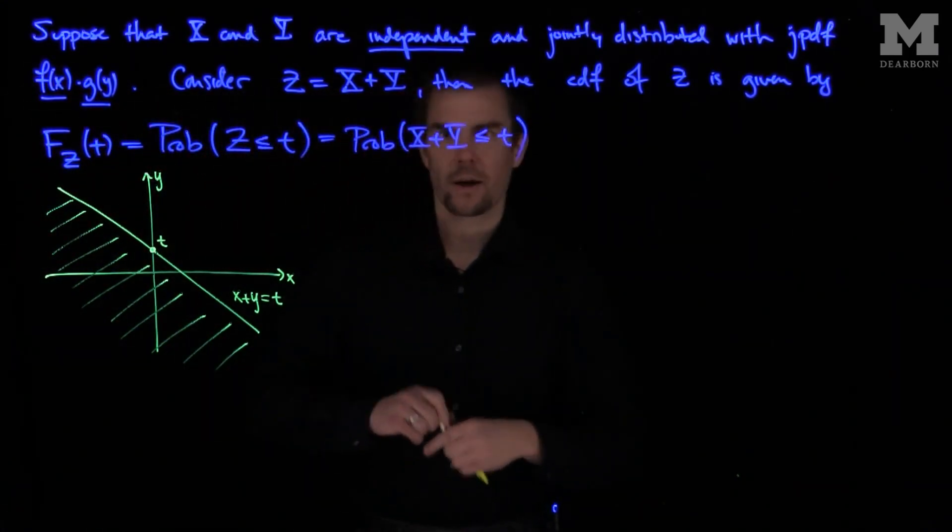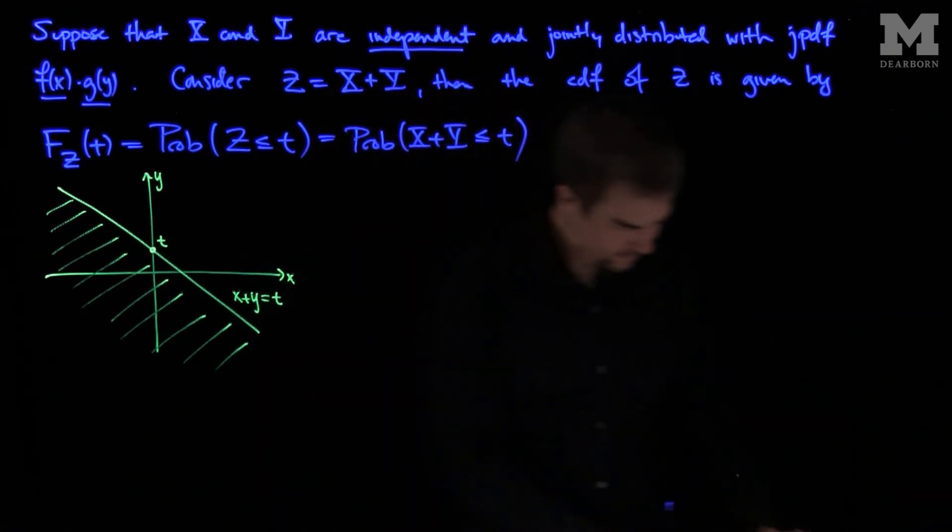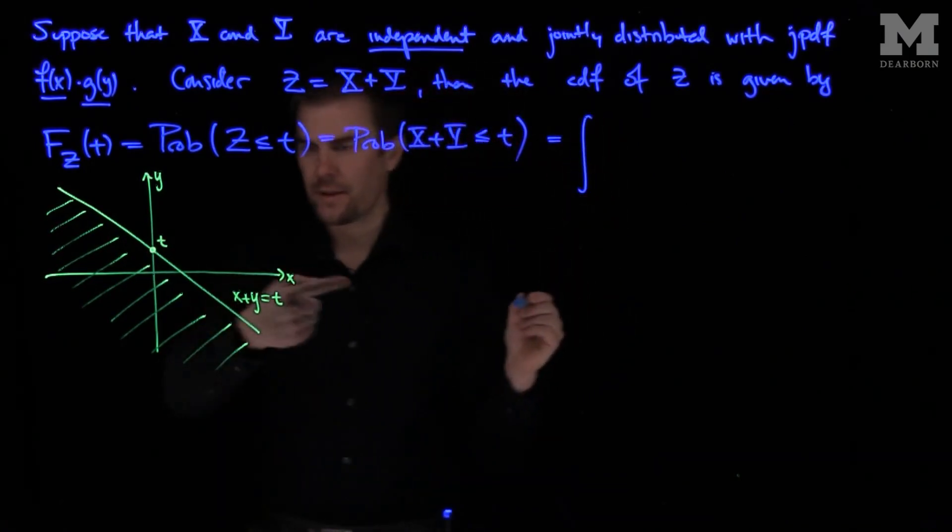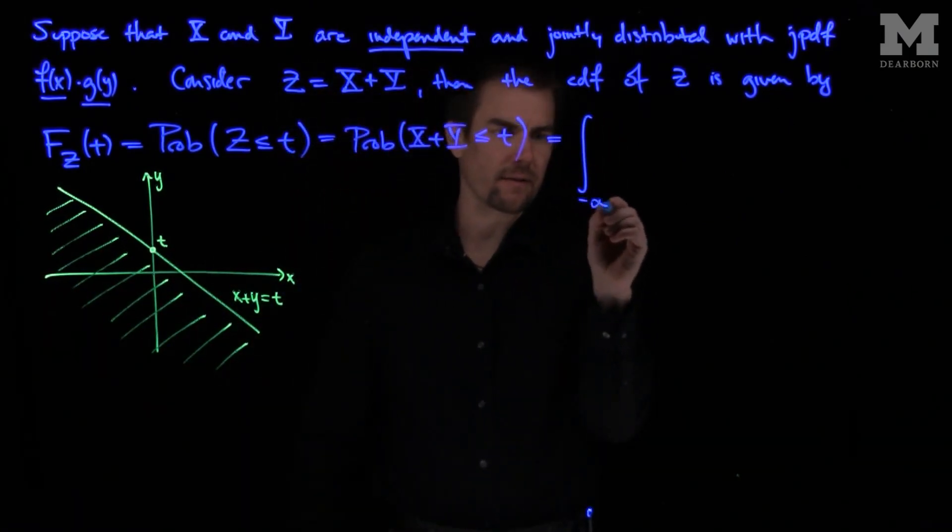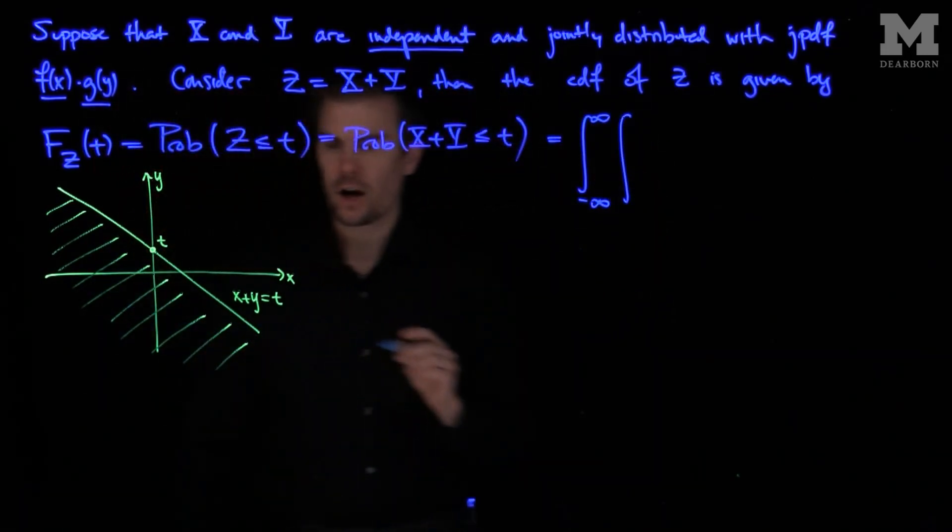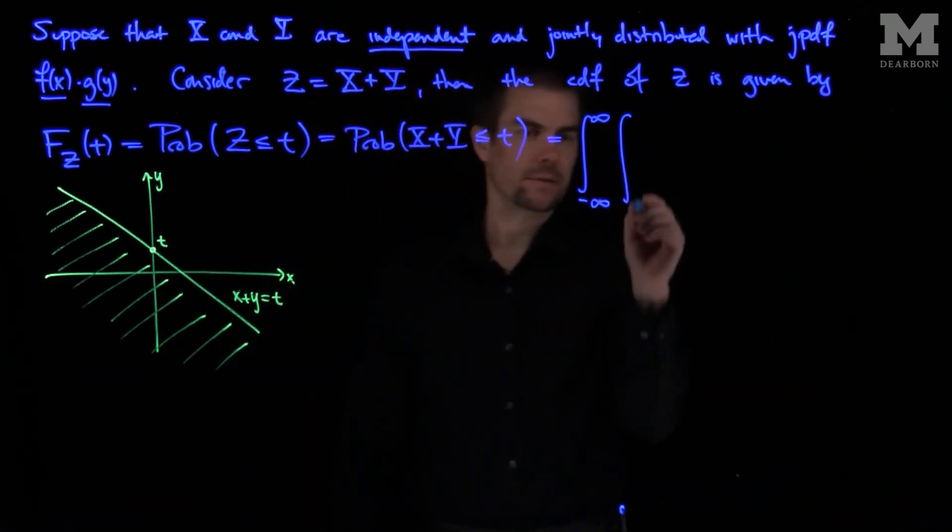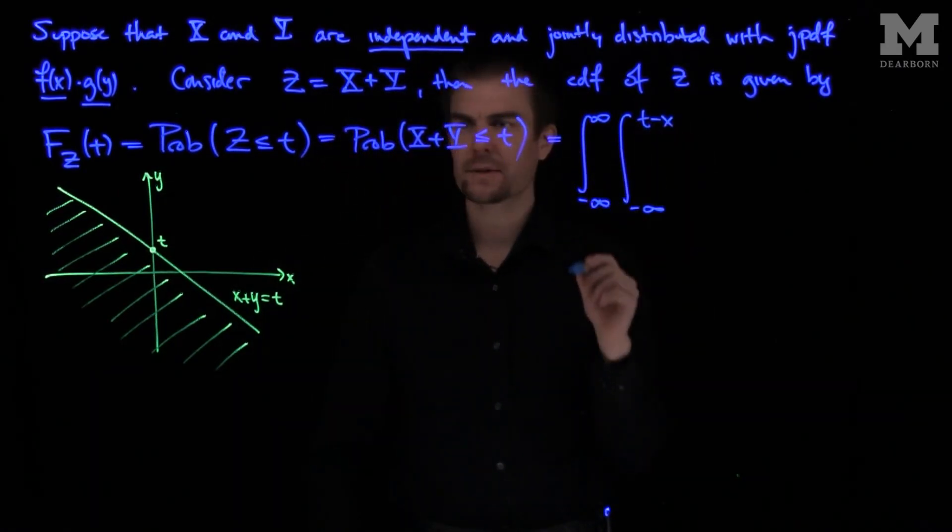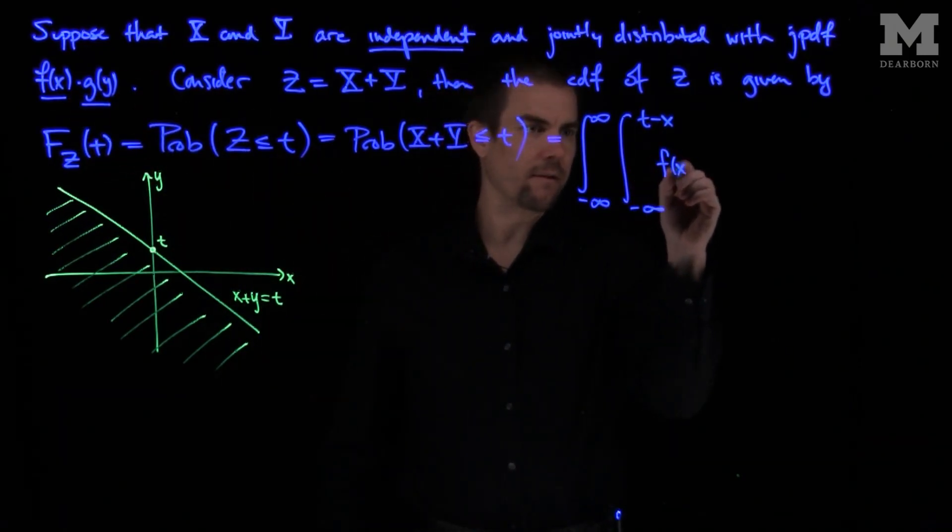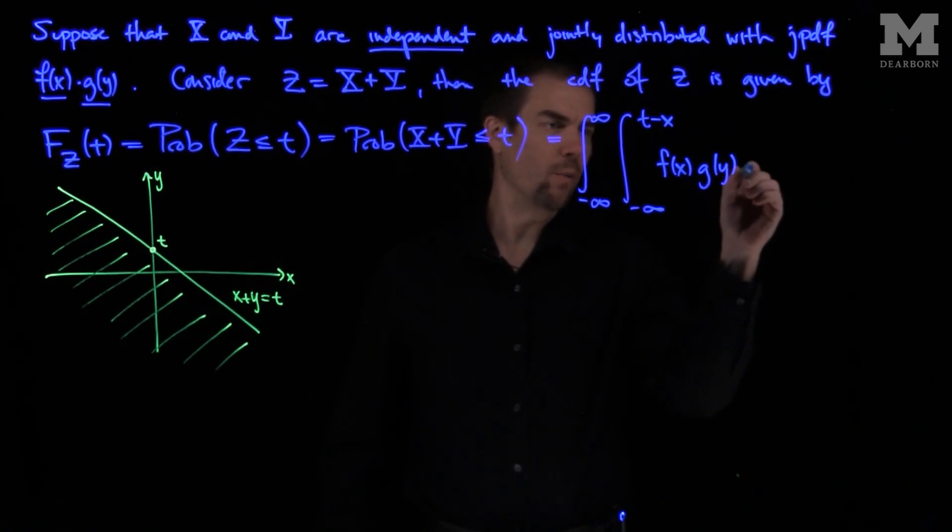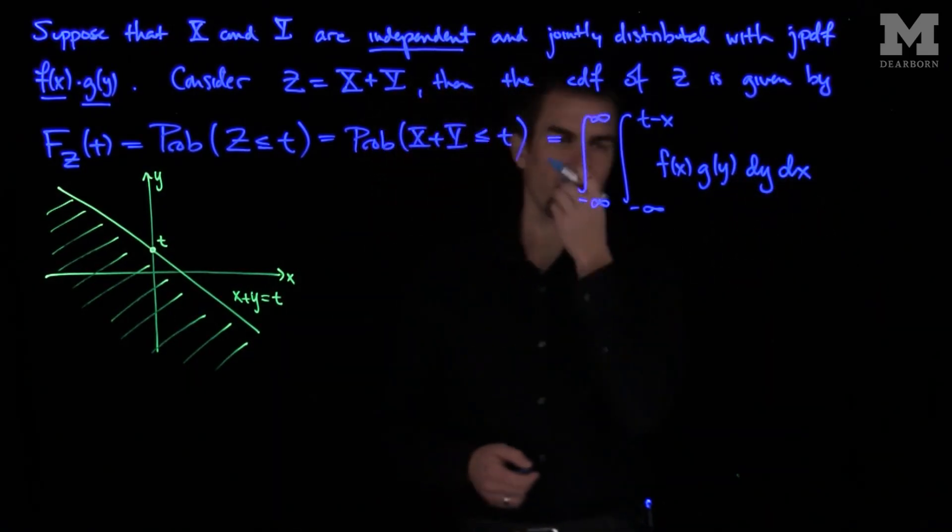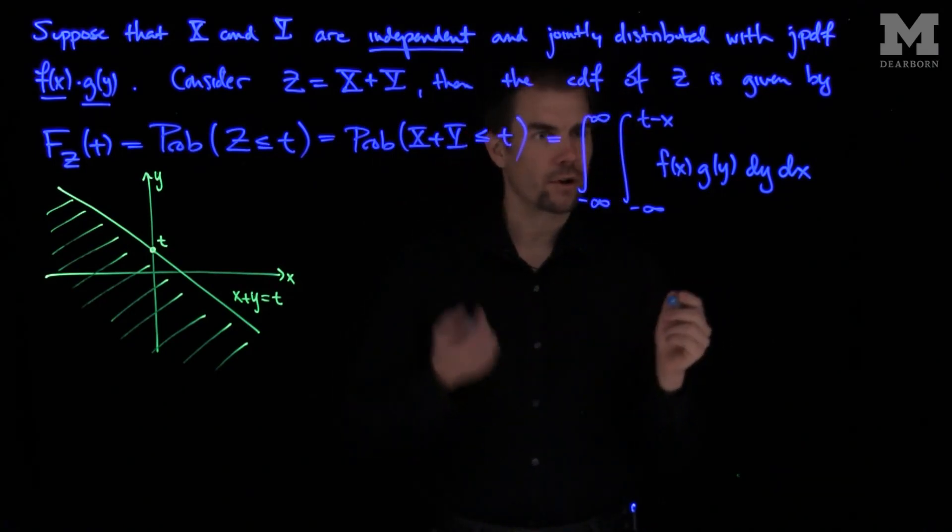And so now what we have is we can write this as a double integral. In this region, x goes between negative infinity and infinity, and y goes between negative infinity up to t minus x. And then we'll have our pdf here, so we'll have f of x, g of y, dy dx. And so this is the formula for our cumulative distribution function of Z.